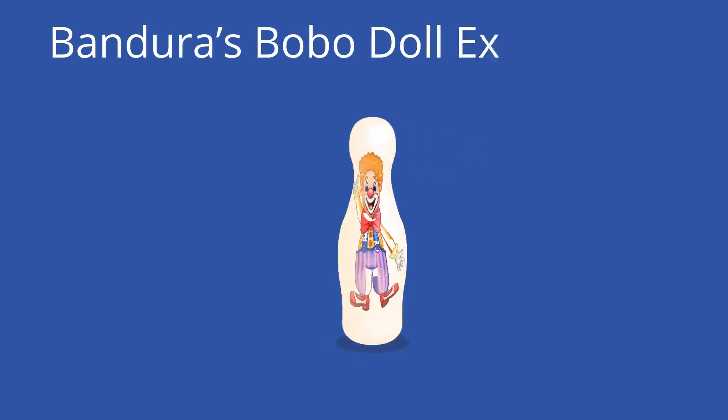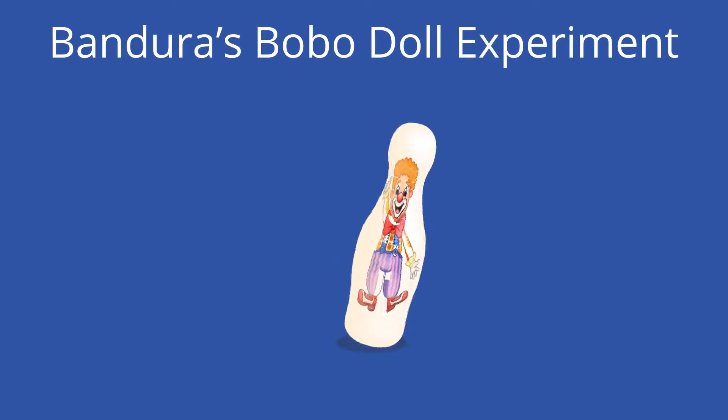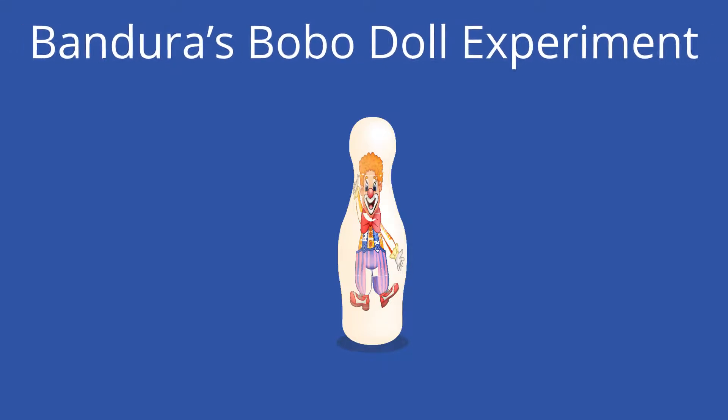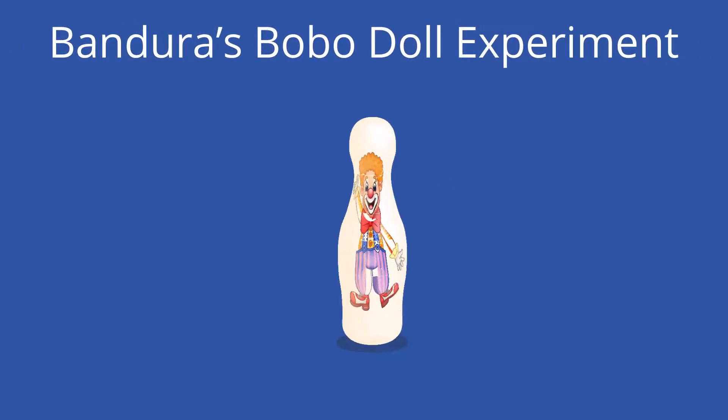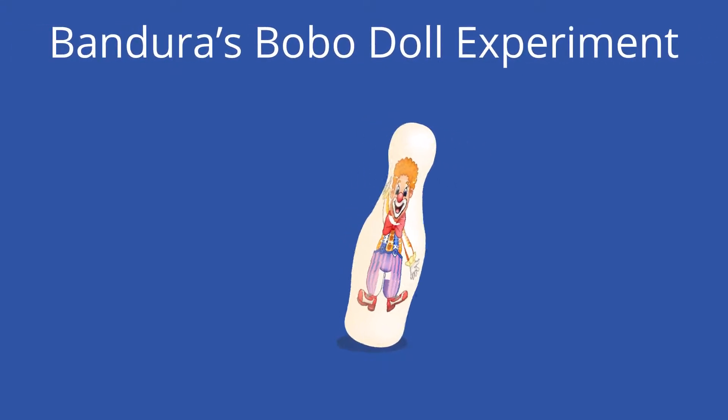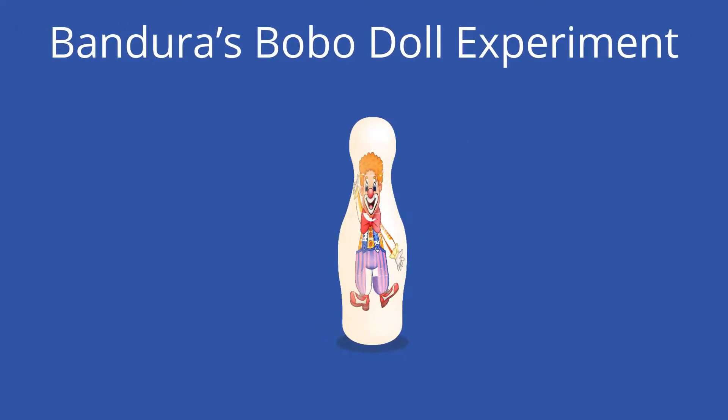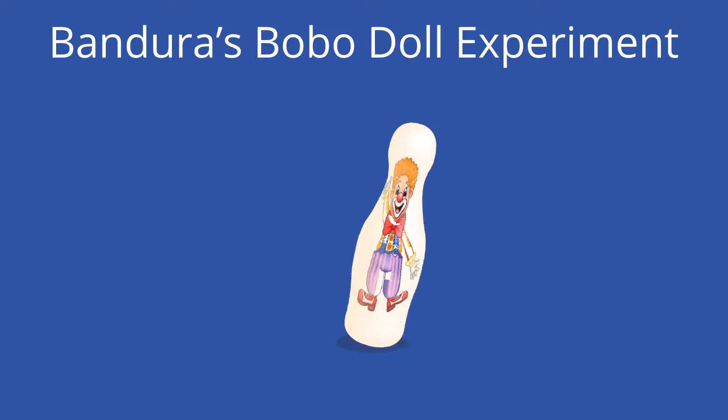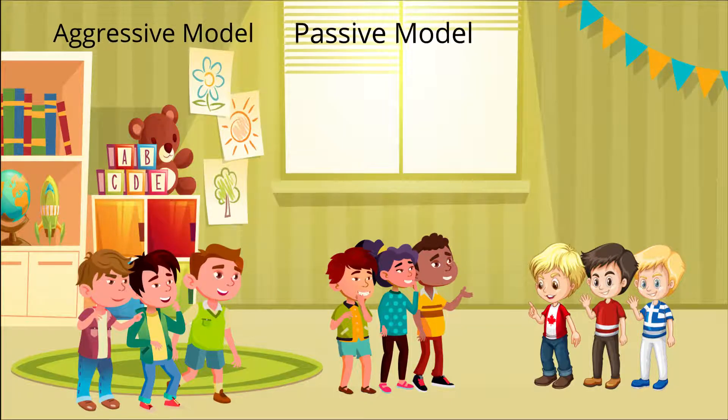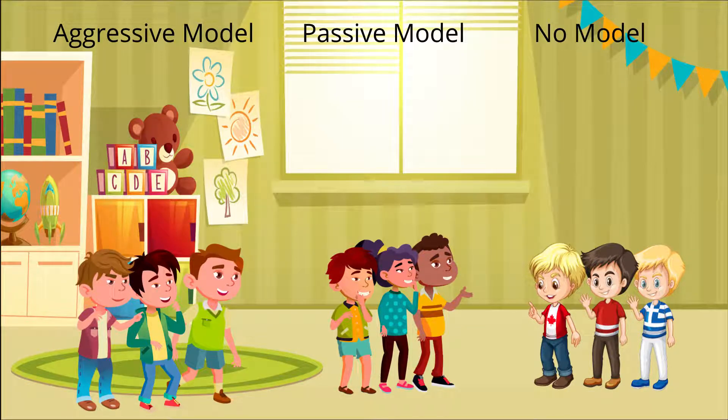This type of social learning was famously studied by Dr. Albert Bandura in his Bobo Doll Experiment. By having children observe an aggressive and non-aggressive model, he was able to prove that human behavior is largely based upon social imitation, rather than genetic factors. The experiment was conducted between 1961 and 1963 at Stanford University.